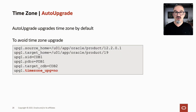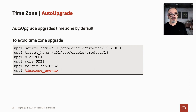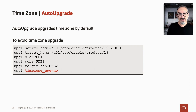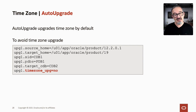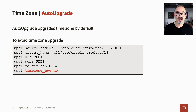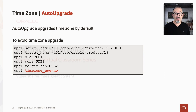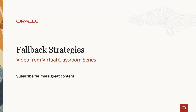AutoUpgrade can do this time zone adjustment by default and does it by default unless you override it. So unless you add 'timezone_upg=no' into your config file, AutoUpgrade will always perform the time zone adjustment by default.